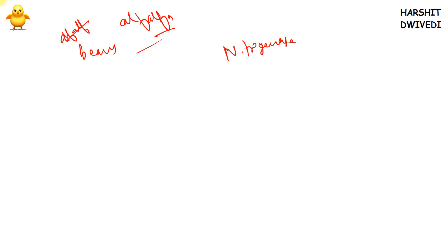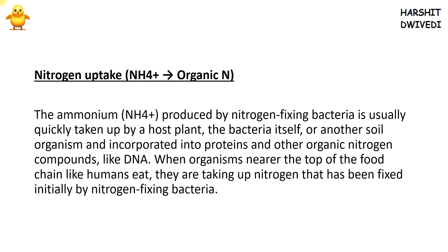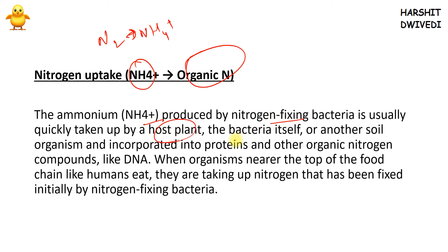After nitrogen fixation, the next topic is nitrogen uptake. We have gone from N2 to NH4⁺. Now this NH4⁺ is converted into organic nitrogen. In nitrogen uptake, the ammonium ion produced by nitrogen-fixing bacteria is taken up by a host plant, the bacteria itself, or another soil organism. It is incorporated into proteins, amino acids, nucleic acids, chlorophyll, vitamins, and DNA — all of which require nitrogen as an essential element.